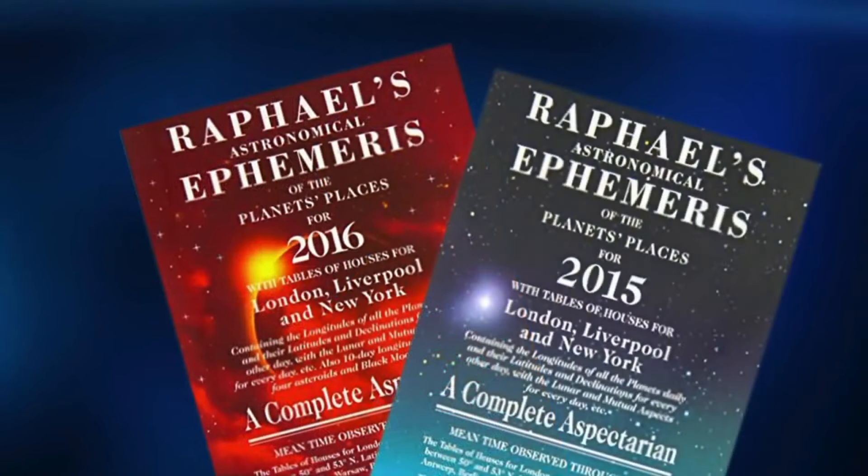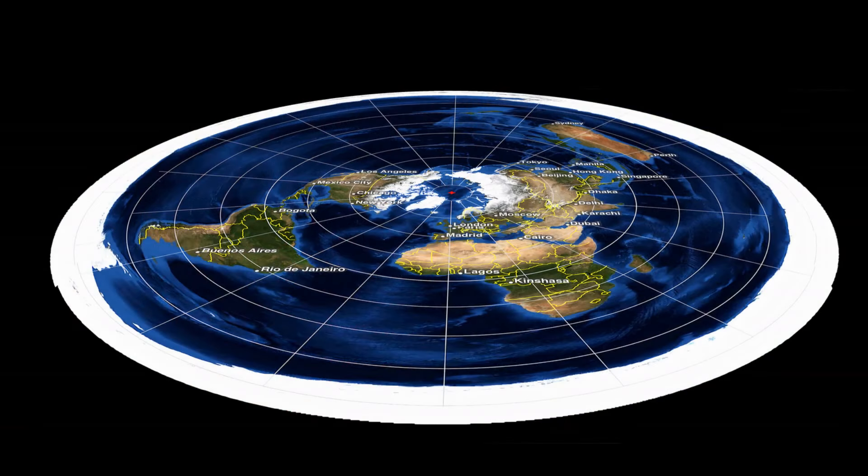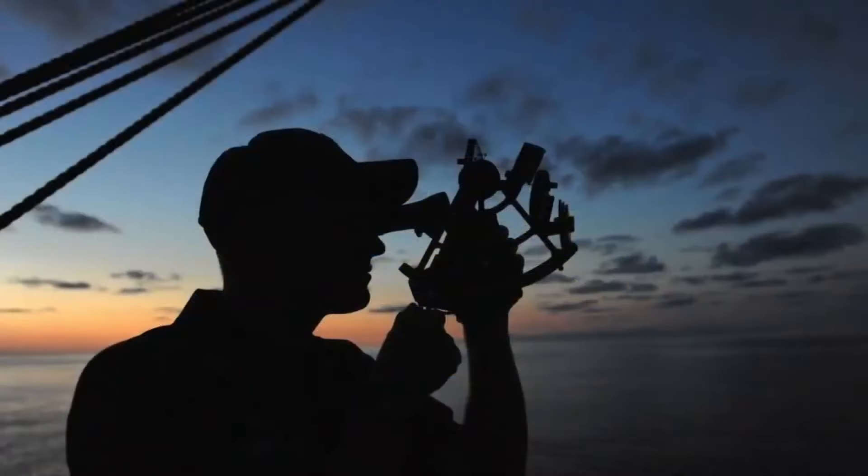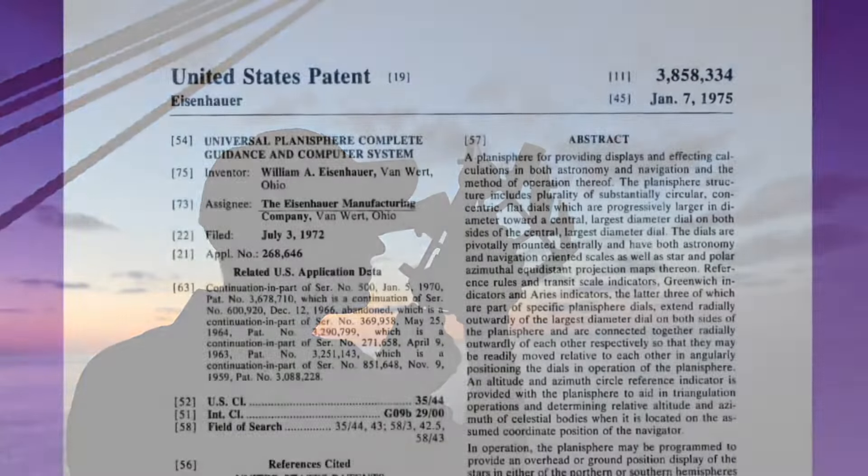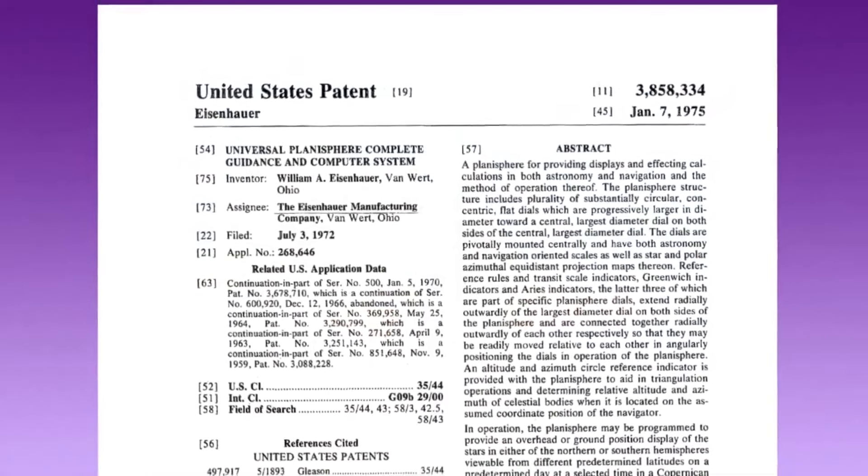An ephemeris is a detailed set of tables from which a navigator can calculate their position anywhere on the earth. During daylight hours, navigation is reliant on the sun and occasionally the moon. At night, the stars provide so much more information, but the calculations are still subject to mistakes. So in 1975, Mr. William Eisenhower patented his Universal Planisphere Complete Guidance and Computer System.